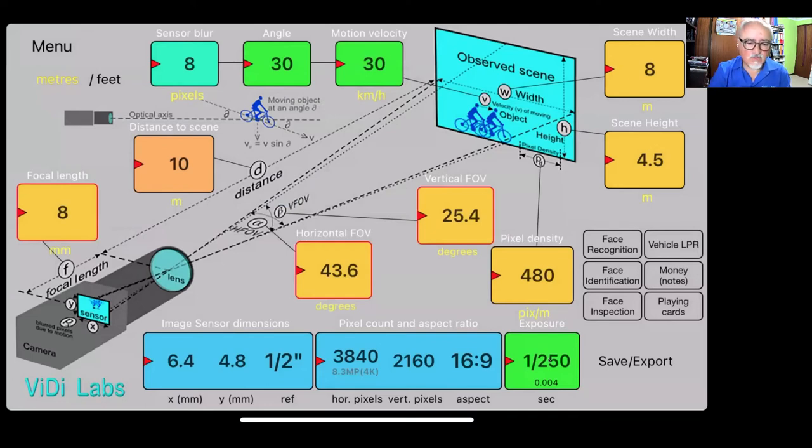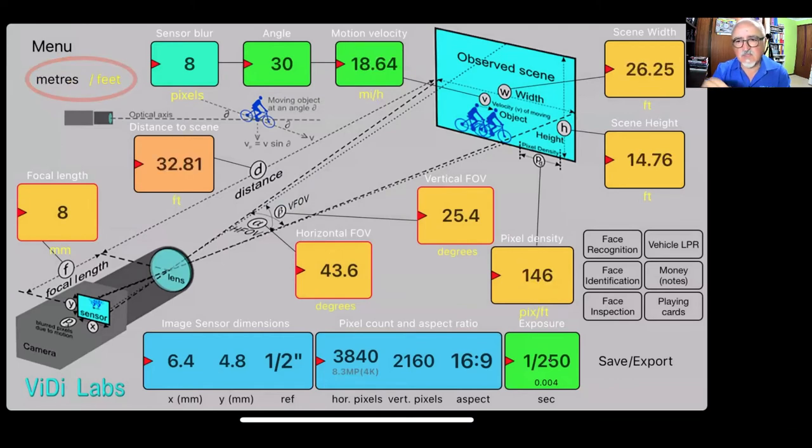We can obviously convert easily into feet by just tapping on the feet. So clearly, pixel density will be pixels per feet. Also, speed will be miles per hour instead of kilometers per hour, as you can see here, pixels per feet, miles per hour, feet instead of meters.